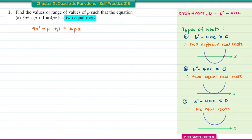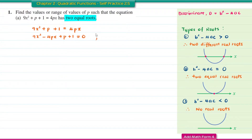First, I'm going to write the quadratic equation in general form by moving 4Px to the left-hand side. This gives us the general form, where A is equal to 9, B is equal to negative 4P, and C is equal to P plus 1.